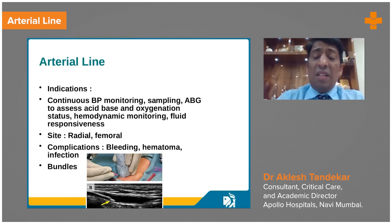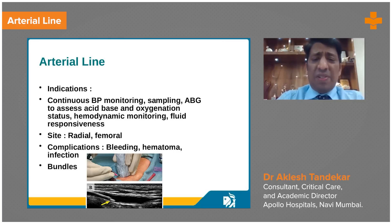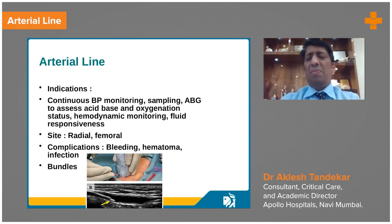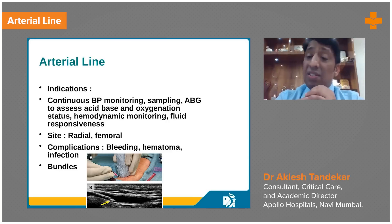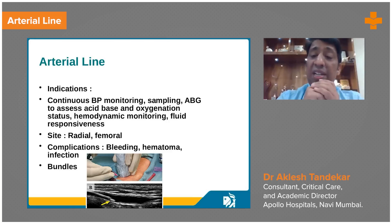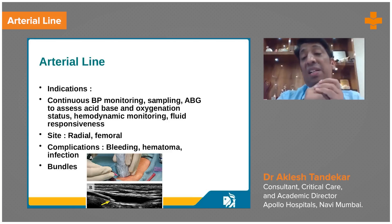The next line that we use is the arterial line — especially for hypovolemic or septic patients whose blood pressure monitoring with a BP cuff is not possible and you need continuous beat-to-beat BP monitoring. Then we need to put an arterial line.